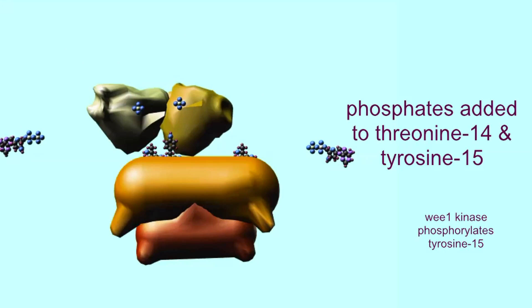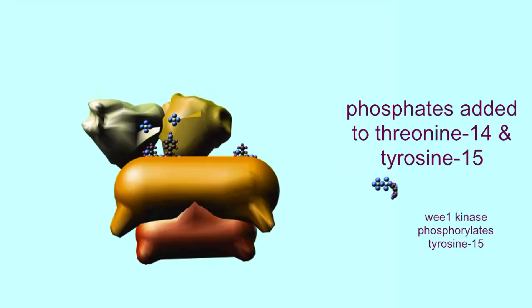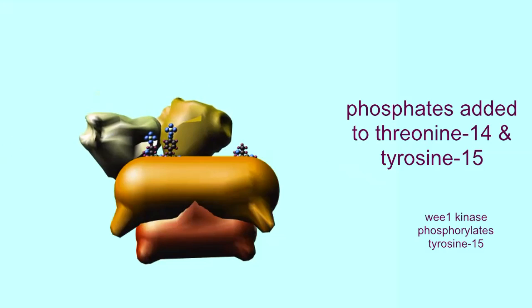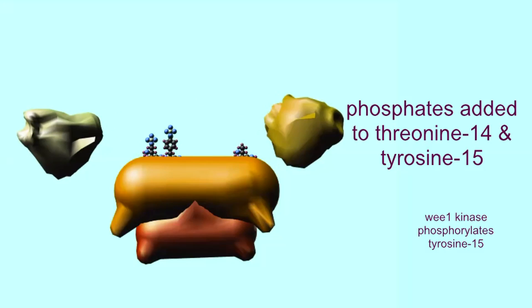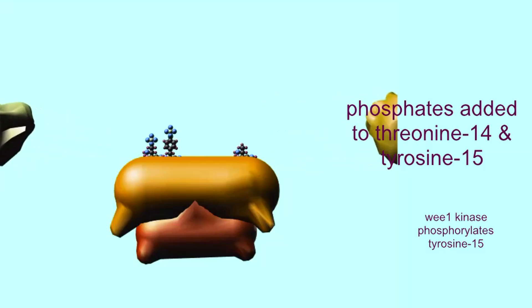Threonine-14 and tyrosine-15. This will inactivate the complex so that it can exist in the cell at a stage where it is not actively promoting cell division.